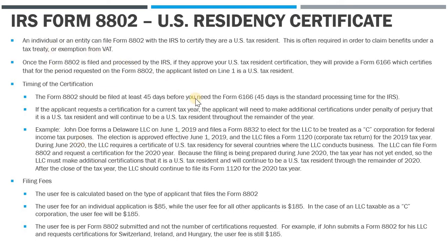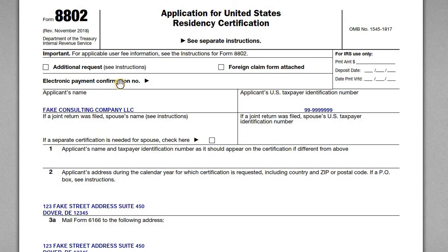In this video I want to cover IRS Form 8802. This is an application to receive a US residency certificate from the IRS. We have a slide here where we'll go over who would need this, under what circumstances, the rules, and an example. On the second page I have an example of an 8802 which we will fill out consistent with the fact pattern on this slide.